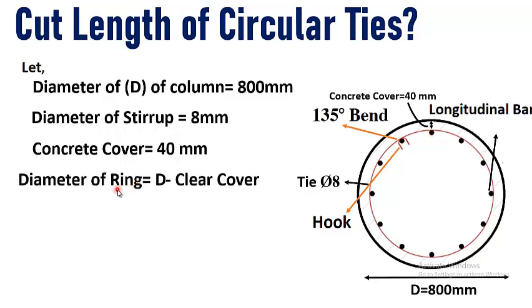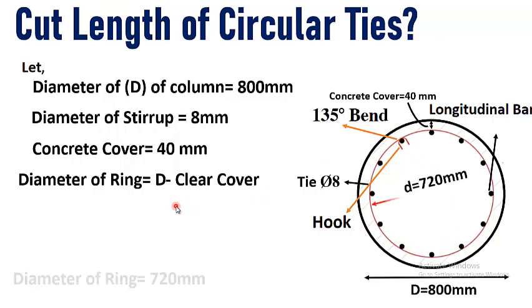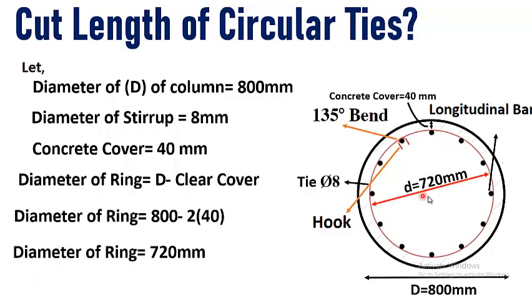The diameter of the ring — that is, the tie or stirrup — is equal to D minus clear cover, also called concrete cover. To get the diameter of the ring, we deduct the concrete cover from the total diameter of the column. This comes out to be 800 minus 40 minus 40, which equals 720 millimeters.